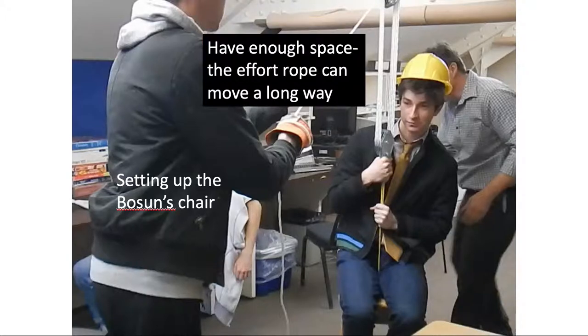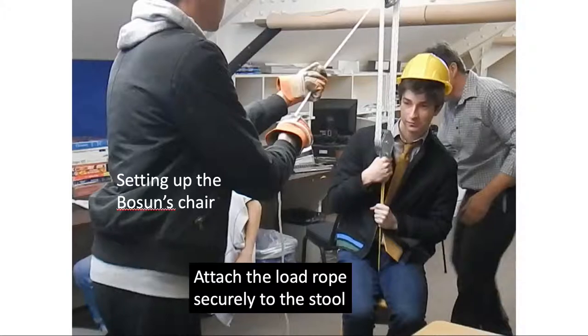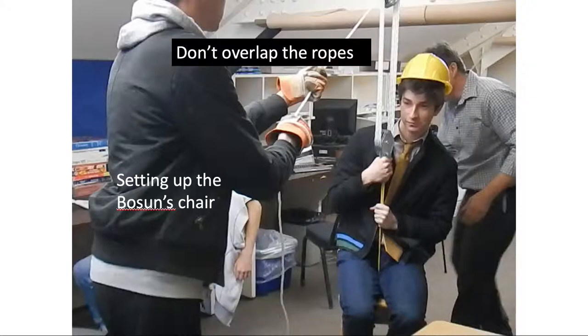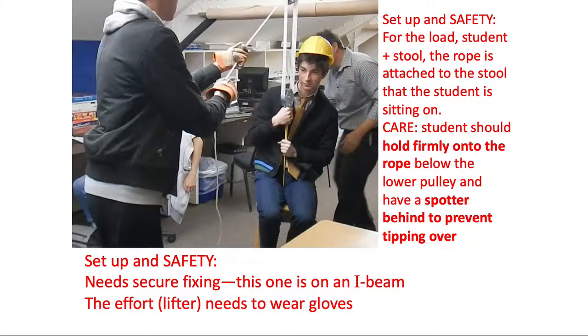Attach the rope securely to the stool because that's holding the person being lifted. Don't overlap the ropes. Each one should go separately over a pulley. And very importantly here, the student has to hold on tightly. The puller here is using gloves. The person sitting on the stool is holding on tightly, and have a spotter behind so that the stool doesn't tip.